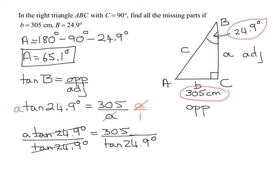So you just put in your calculator 305 divided by the tangent of 24.9 degrees, making sure your calculator is in degree mode. And I got 657.066, which when I round it to the nearest whole number gives me 657 centimeters.